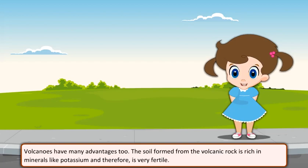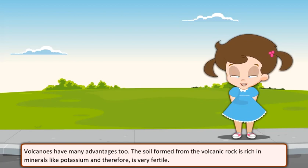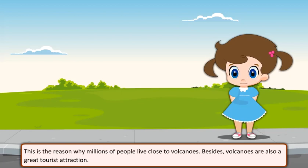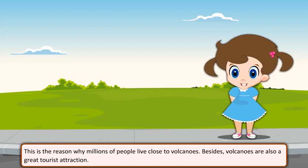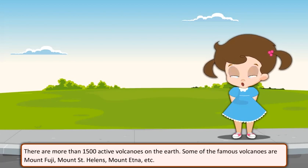Volcanoes have many advantages too. The soil formed from volcanic rock is rich in minerals like potassium and therefore is very fertile. This is the reason why millions of people live close to volcanoes. Besides, volcanoes are also a great tourist attraction. There are more than 1500 active volcanoes on the earth.